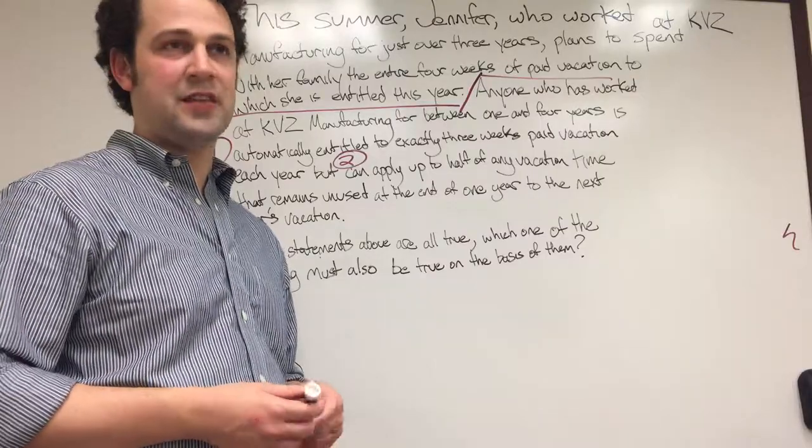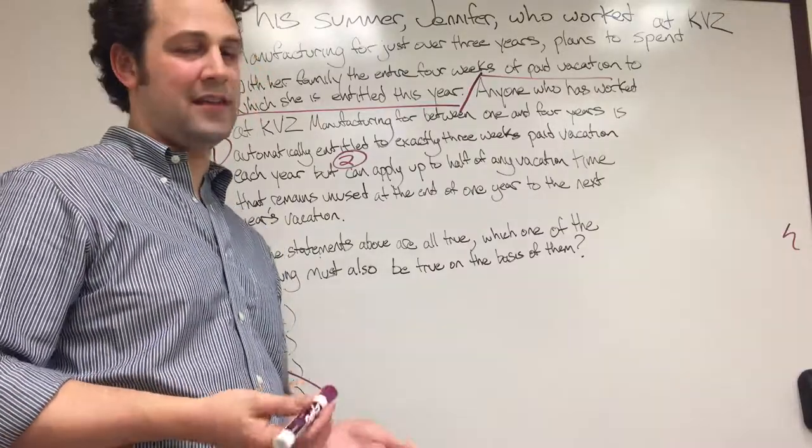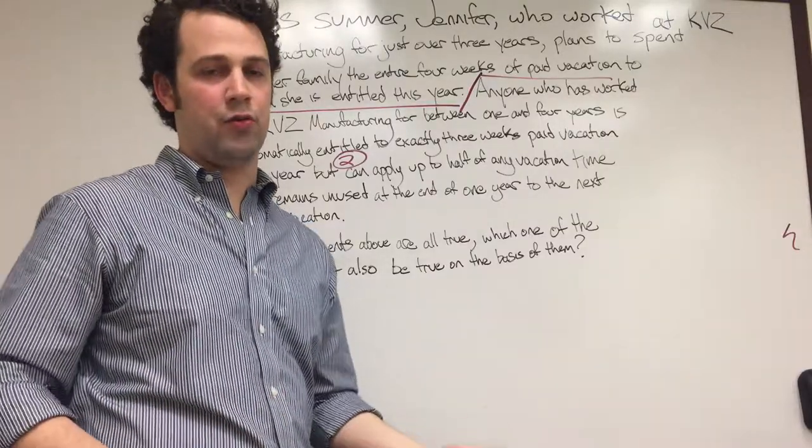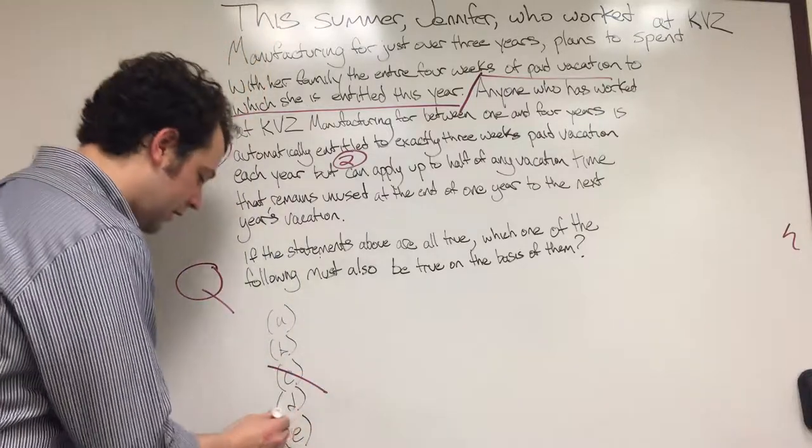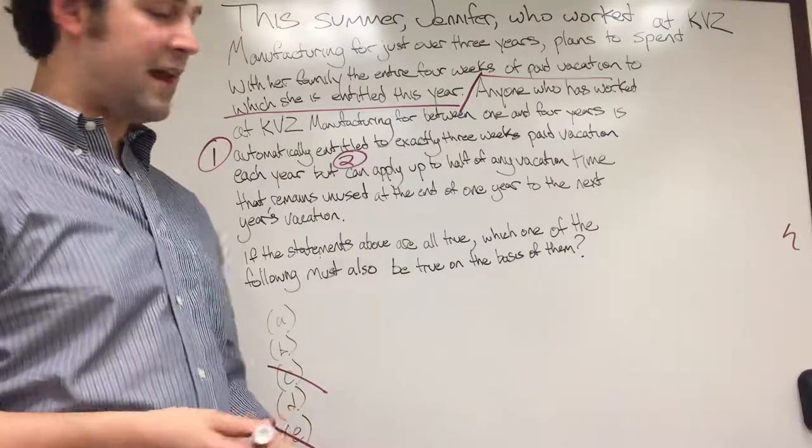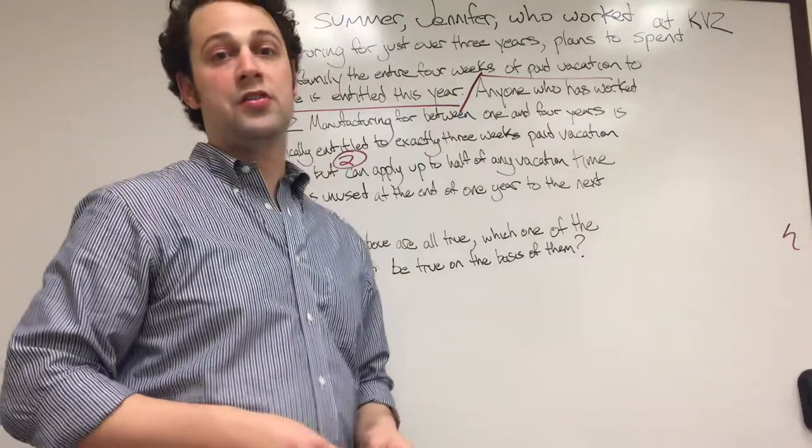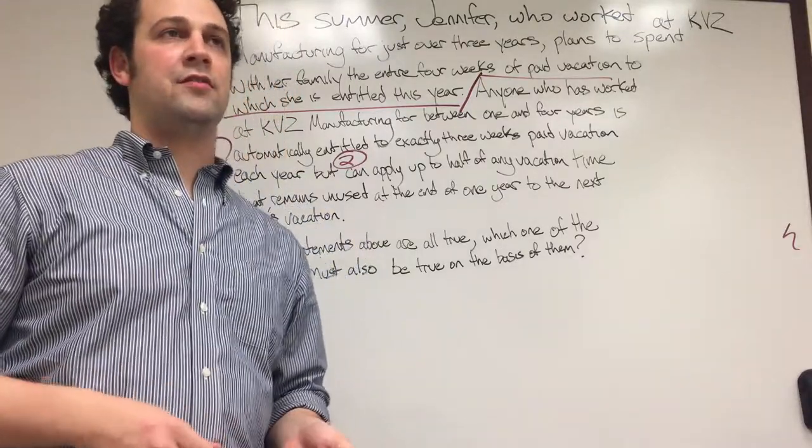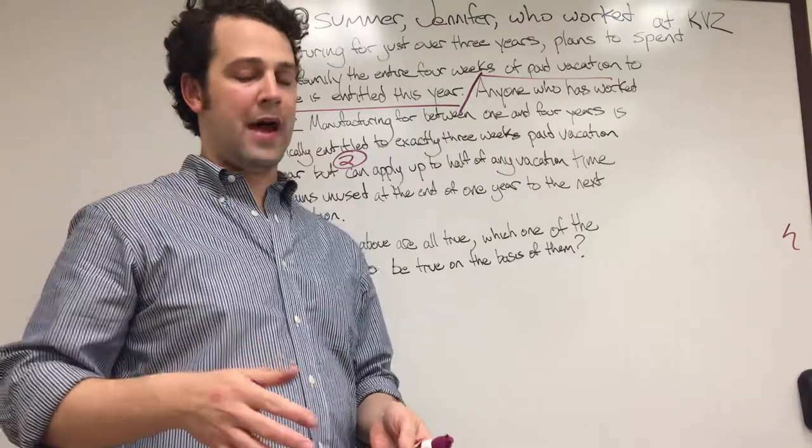Sometimes allows, we can't, that's a qualified statement. We can't really say it's true based on our facts. So E we can immediately get rid of. So we've narrowed it down to three. Now in most questions, you're going to be able to narrow it down to three almost immediately off the bat.